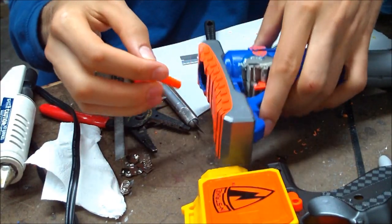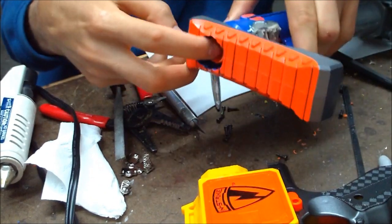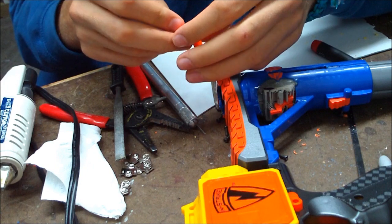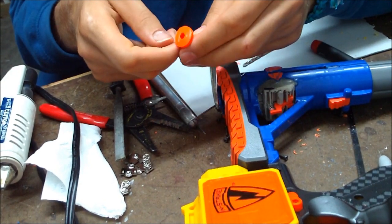Alright, so what I've done is I've pulled out the back of the extra space in the plunger. And what I'm going to do is just cut it out as well.